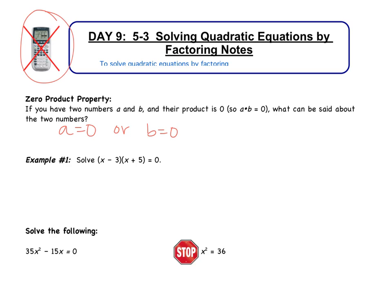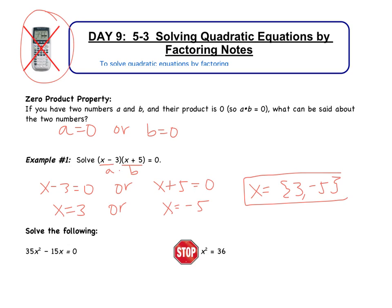So looking at example number one, I have two factors, we can call them a or b, and when I multiply them I get zero. That tells me that x minus 3 equals zero, or x plus 5 equals zero. If I add 3, I get x equals 3, or if I subtract 5, x equals negative 5. So in this case I have two solutions, 3 and negative 5. If I substitute either of those values in, I will get zero. So that's what we're going to be doing today. We're going to be factoring and setting our parts equal to zero.